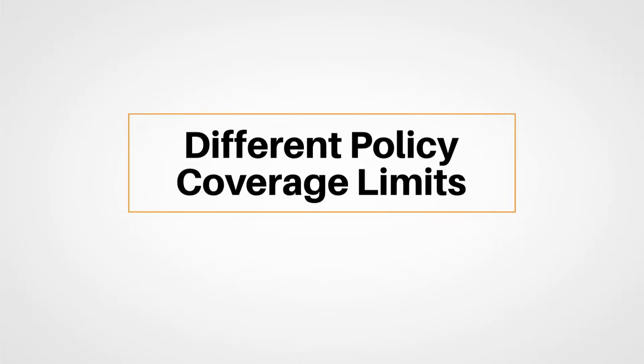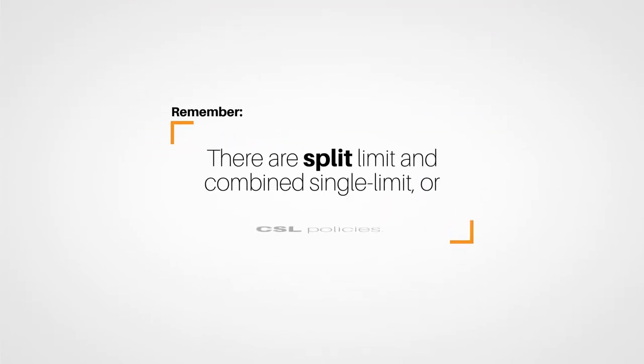Finally, we looked at the different types of policy coverage limits. Remember, there are split limit and combined single limit, or CSL, policies. For commercial insurance policies, many of these contracts contain a per-occurrence limit and an aggregate limit of liability. The per-occurrence limit is the most the insurer will pay for any one loss, and the aggregate is the maximum the carrier will pay for the entire policy period.